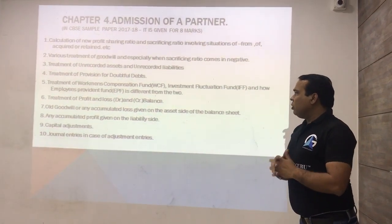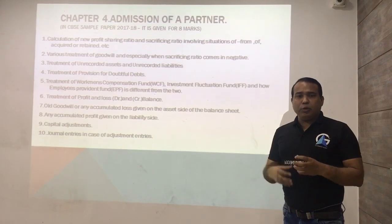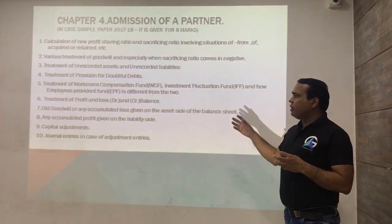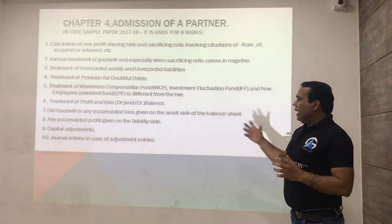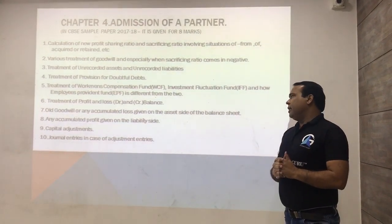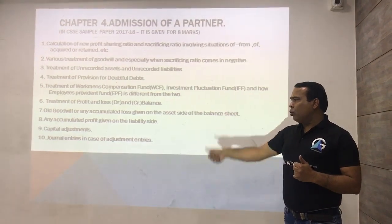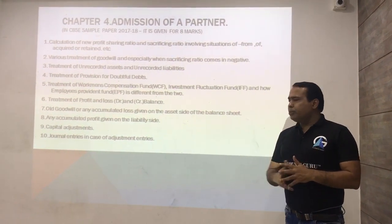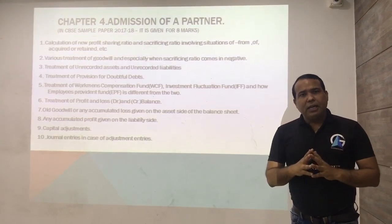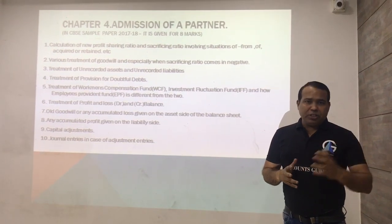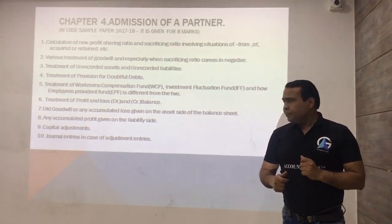When discussing accumulated loss given in an account, the same revenue of the firm will be used to make the adjustment and the same amount has to be paid. Any accumulated profit on the liability side — such as General Reserve and WCF — both need to be adjusted and the capital accounts need to be updated accordingly.